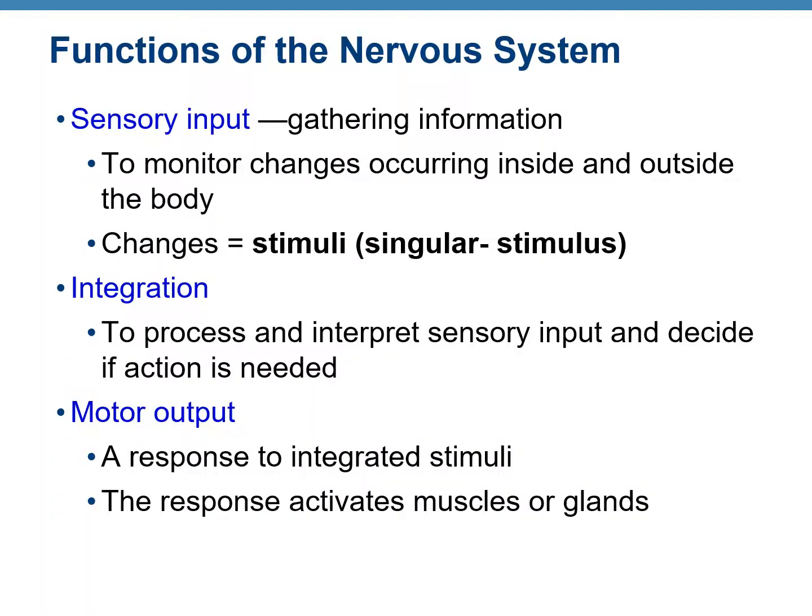There are three main functions of the nervous system. The first one is gathering information, and scientifically we call it the sensory input. Any trigger or change in the external environment is known as a stimulus — plural would be stimuli — and the nervous system receives this stimulus.